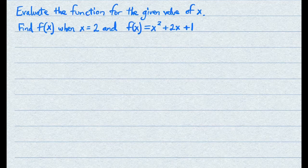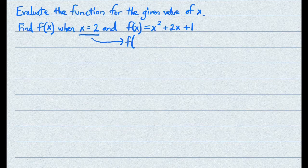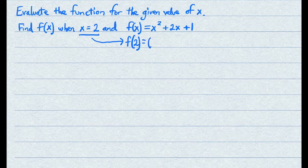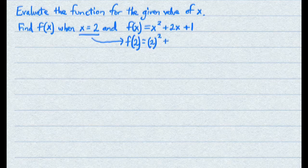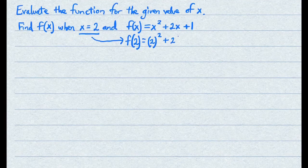All you have to do here — they're telling you that x equals 2. So wherever you see an x, just replace it with 2. You're just plugging it in. Go ahead and put parentheses whenever you replace the x; just make a habit of that. It'll help you when you have negatives. So that's 2 squared plus 2 times 2 plus 1.